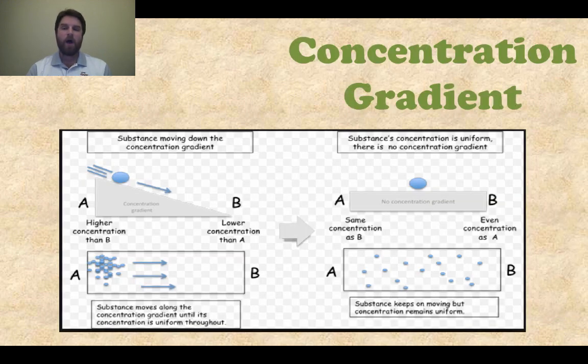Now how do these particles move? They move according to a concentration gradient. That just means that if there is a higher concentration of substances outside the cell than there is inside, then the particles are going to want to move from the outside to the inside.